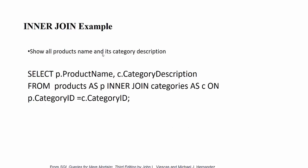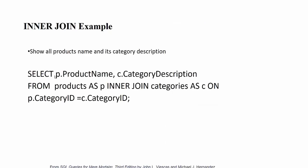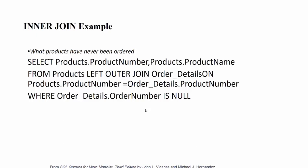For example, if we are looking for all product names and category descriptions, we can see that categories and products are separate tables. We can inner join the products and categories tables on the category ID to get the category information for each product — selecting product name and category description.